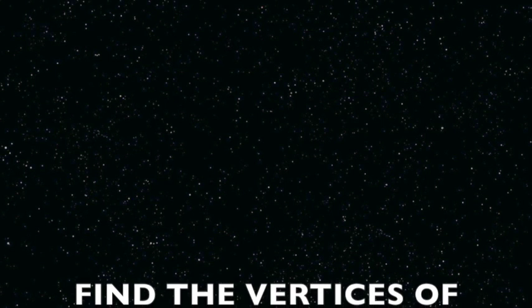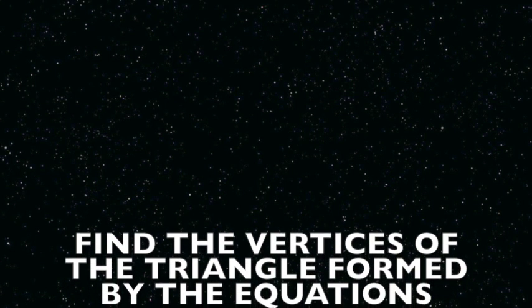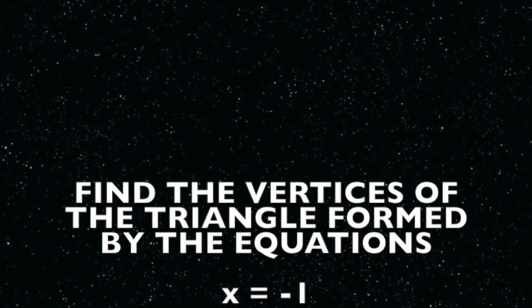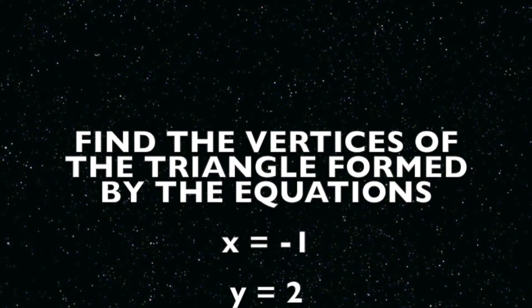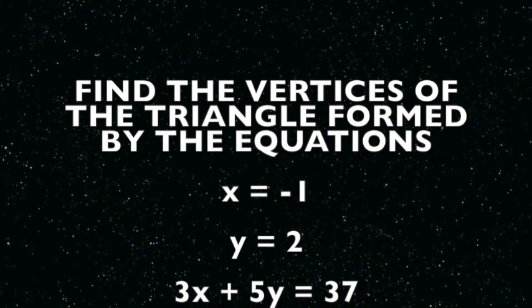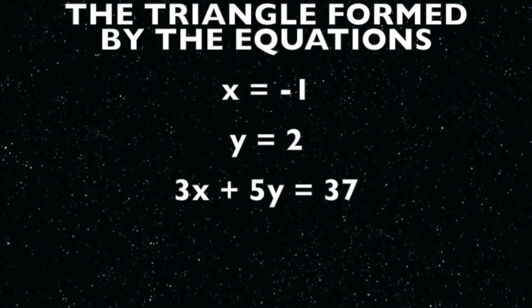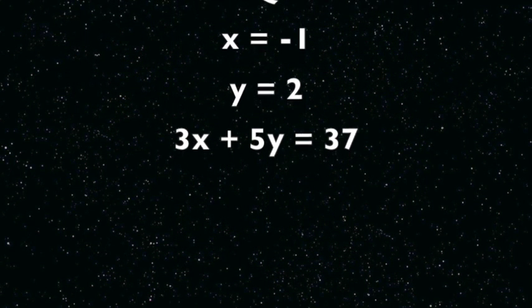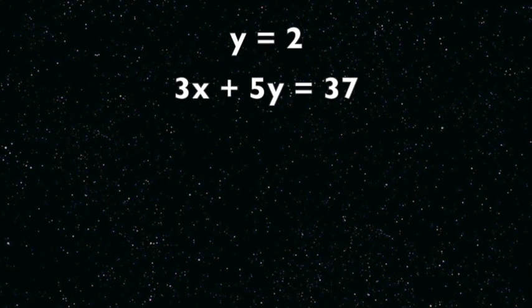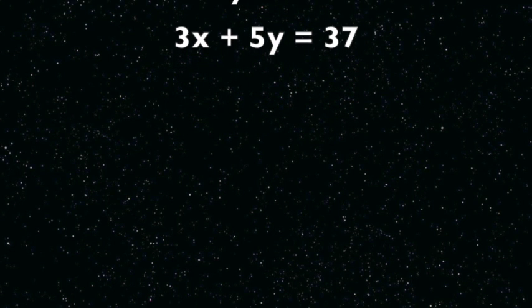I want you to find the vertices of the triangle formed by the equations x equals negative 1, y equals 2, and 3x plus 5y equals 37. After you find the vertices, I also want you to write the equation for the Euler line.